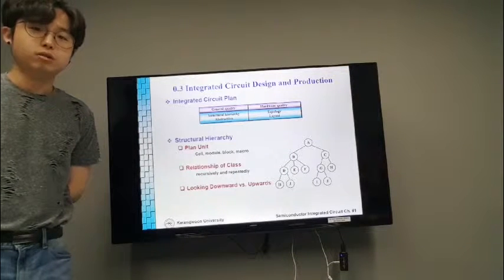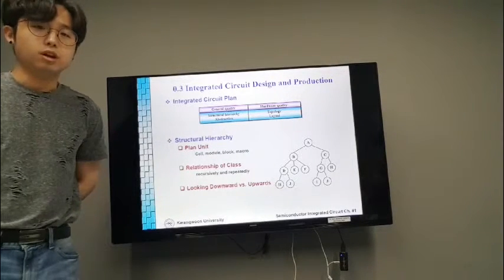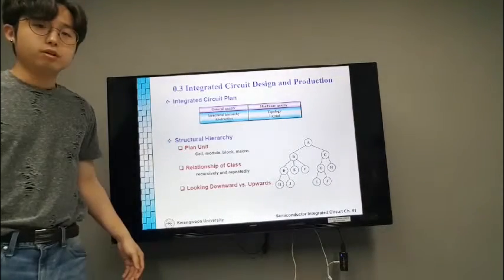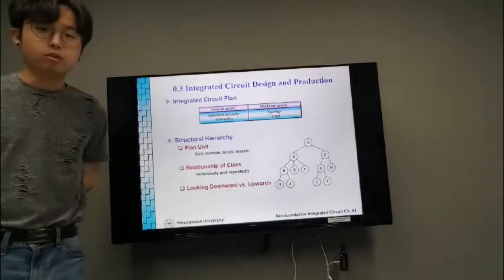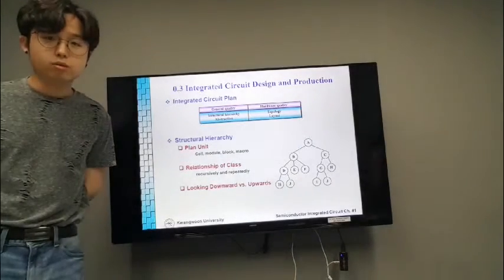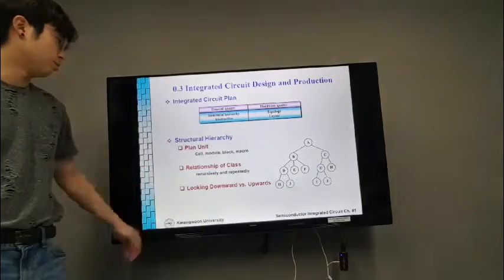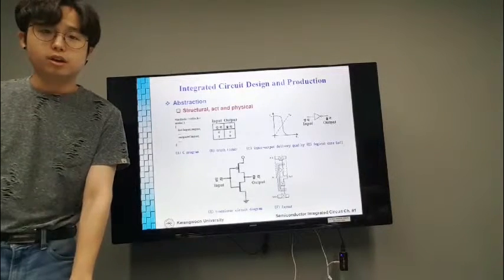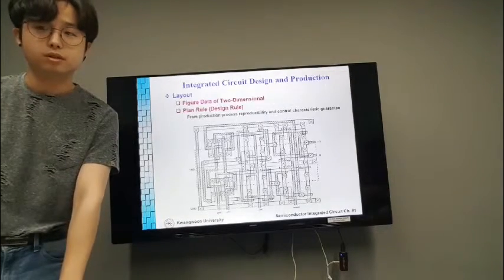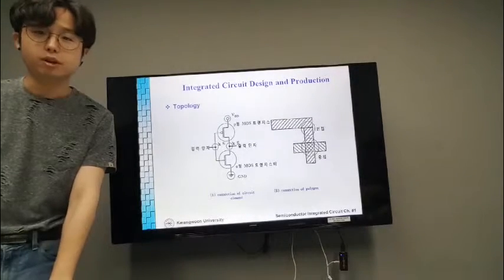Next, we are going to talk about integrated circuit design and production. In integrated circuit plan, there are four subjects. In the matter of general quality, we are talking about structural hierarchy and abstraction. In the matter of hardware quality, we are talking about topology and layout. In structural hierarchy, we consider plan unit, relationship of class, and order of looking downward or upward. In abstractions, we consider structural, act, and physical. And we consider topology, connection of circuit element, and connection of polygon.